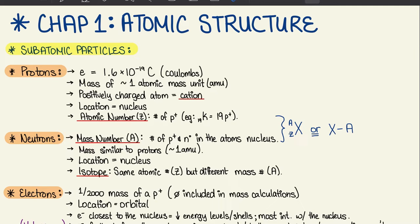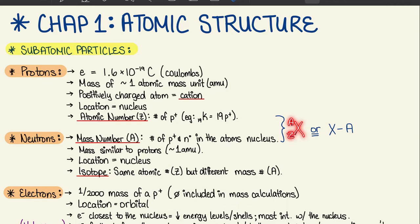Moving on, we have neutrons — same location and similar mass to protons. For this, we have the mass number A. A is the number of protons and neutrons in that specific element. On the side here, we have element X with a superscript of A and a subscript of Z. The superscript A is the mass number and the subscript Z is the number of protons, also known as the atomic number.